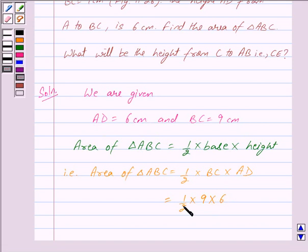Cancelling 2 in denominator and numerator, we get 3 in the numerator. So 9 times 3 equals 27. We get 27 cm squared. Area of triangle ABC is 27 cm squared.